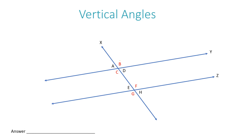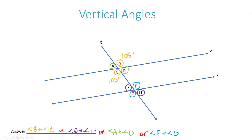Vertical angles are angles that are exactly diagonally across from each other at an intersection. So angles B and C are vertical angles. When it comes to measurements, they're the exact same — if angle B is 105 degrees, then angle C is also 105 degrees. A possible answer for vertical angles would be angle B and angle C. Another example is angle E and angle H. Also, angle A and angle D are vertical angles, and angle F and angle G are vertical angles.